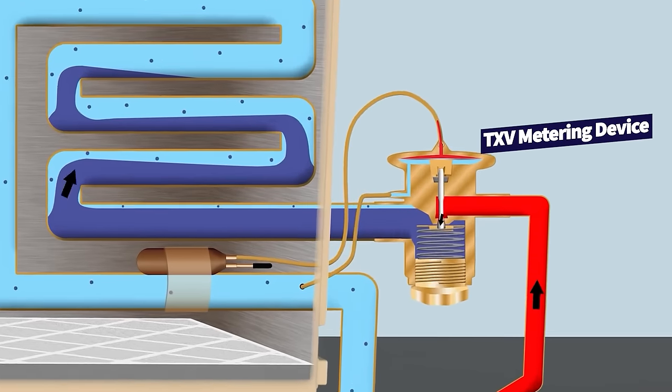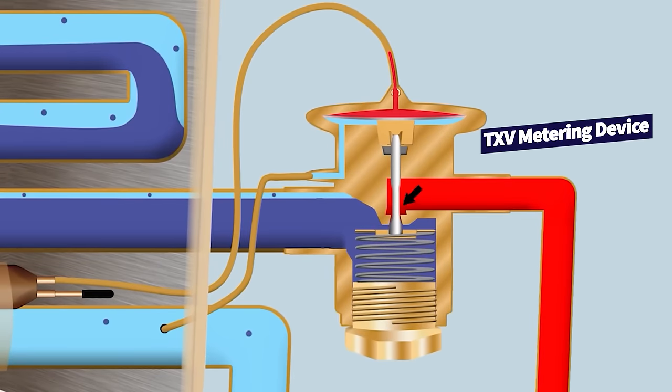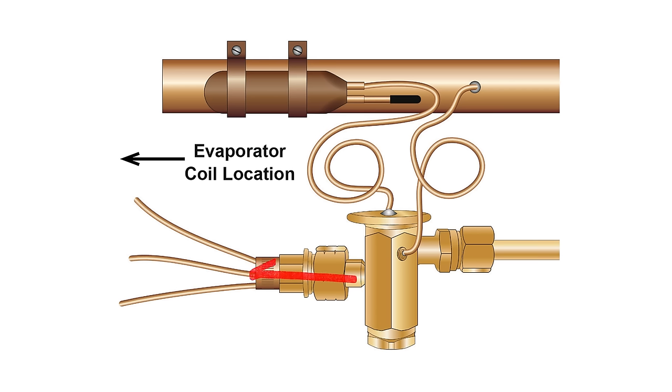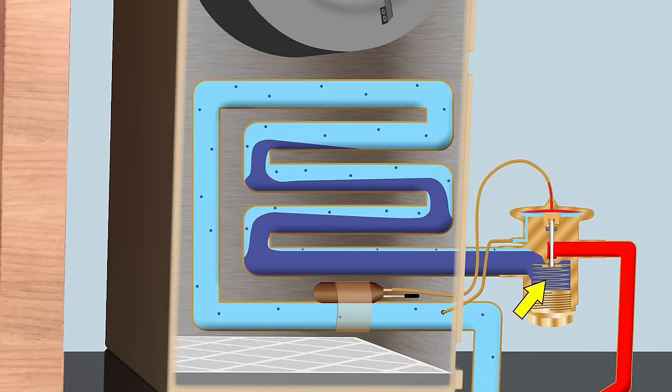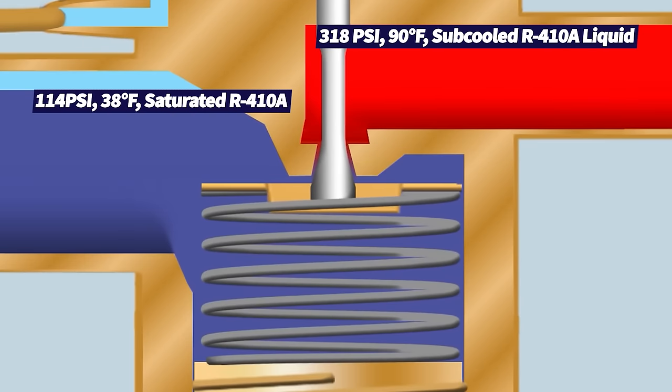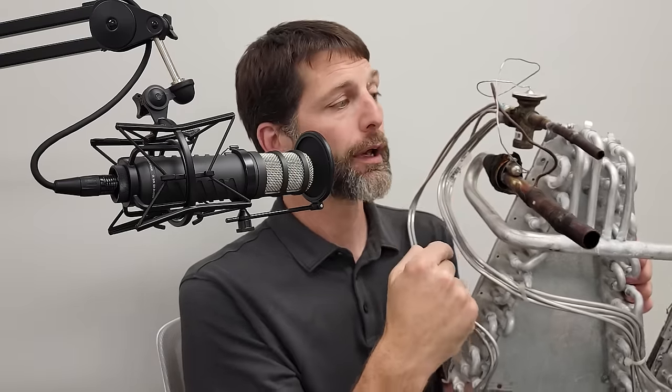You have high pressure refrigerant entering into the restriction device — also noted as a metering device — and then it travels through the distributor tubes into your indoor unit's coil. The whole point of this restrictor is to lower the pressure of the high pressure refrigerant. When you lower the pressure, you're going to be lowering temperature as well. The job of this indoor unit coil is to be a heat transfer device between the refrigerant traveling through the tubes and the air crossing over the fins.